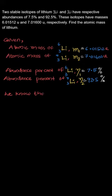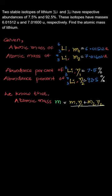We know that the mass of an atom is equal to the weighted average of isotopes. So the atomic mass of lithium, represented as M, is equal to M1 times eta1 plus M2 times eta2, divided by eta1 plus eta2.